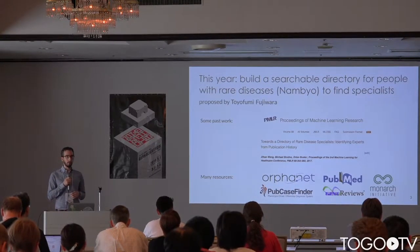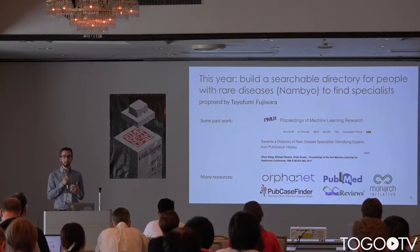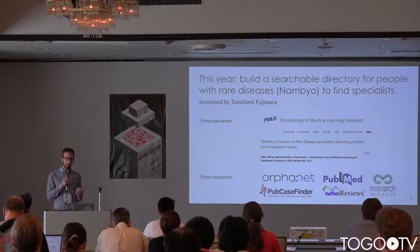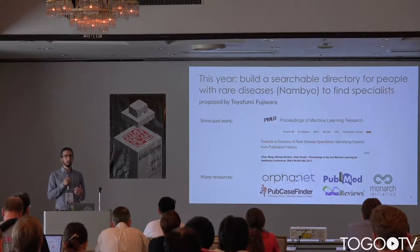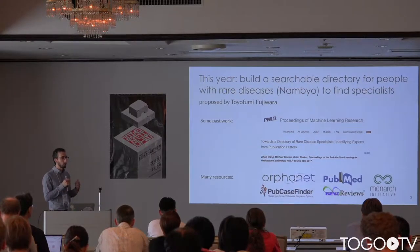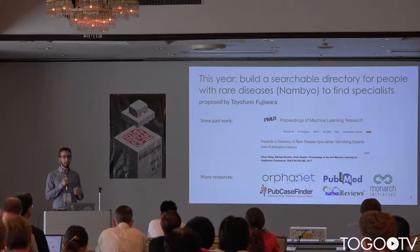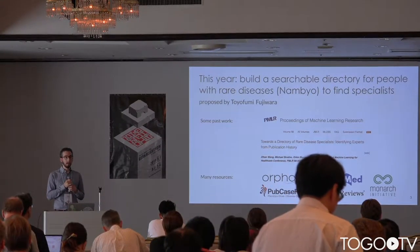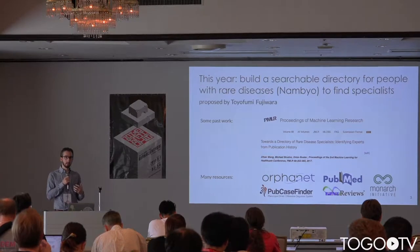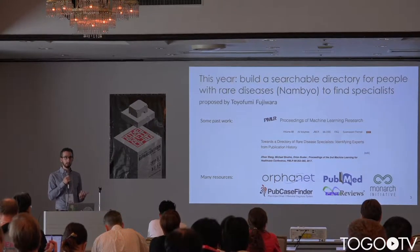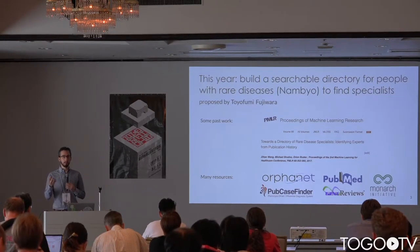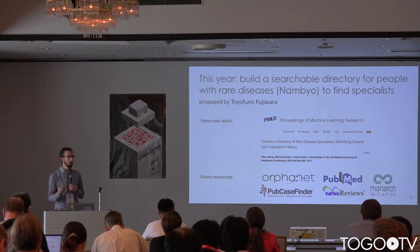The main effort for this hackathon was proposed by Fujiwara-san, and I think this is a really exciting opportunity to work on building a searchable directory of specialists — Nanbyo specialists — for people with rare diseases, to help them find those specialists in their country or around the world. I've worked on some past work with a student a few years ago on this. I'm interested in expanding from resources represented here and elsewhere: Orphanet, Monarch Initiative, PubMed. We did some text mining to understand specialists based on their publication history, but I think there's more we can do, and I think it would be really useful to have at the end of this event a tangible website that people could actually go to to navigate this information.